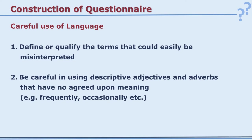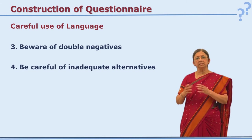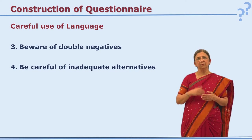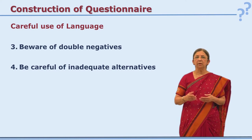Be careful in using descriptive adjectives and adverbs that have no agreed-upon meaning. For example, 'occasionally' might mean three times a week for one person and two times or hardly any time for another. Such words are interpreted differently by different respondents, making the data erroneous. You must also avoid double negatives in statements — double negatives mean positive, but people often do not understand that, leading to wrong responses.